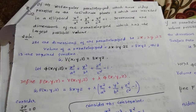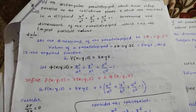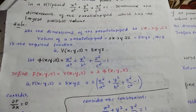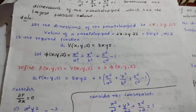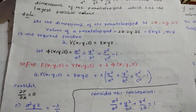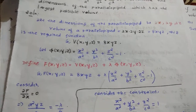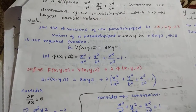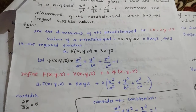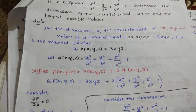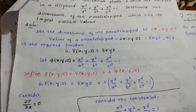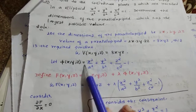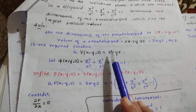Let the dimensions of the parallelepiped be defined as shown. Using those dimensions, the volume formula of the parallelepiped — which is similar to a cuboid with formula length × breadth × height — becomes 2x × 2y × 2z, giving 8xyz. So we take the volume function as V(x, y, z) = 8xyz.